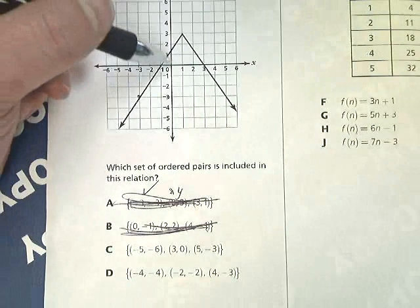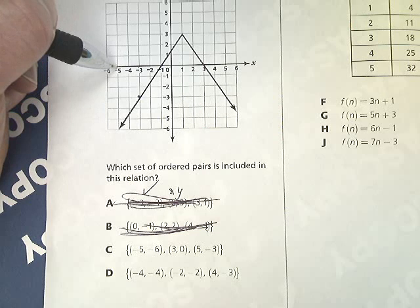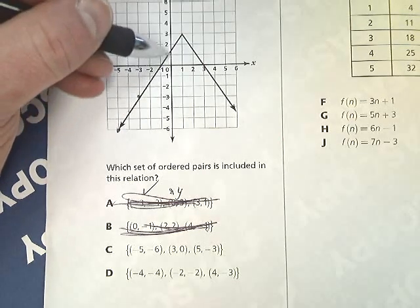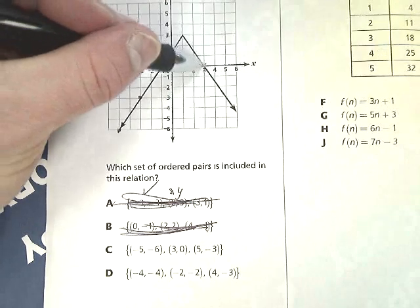C, negative 5, negative 6. Negative 5, negative 6. So yeah, that's good. 3 and 0. So I'm going to go over to 3 and at 0. That's good.